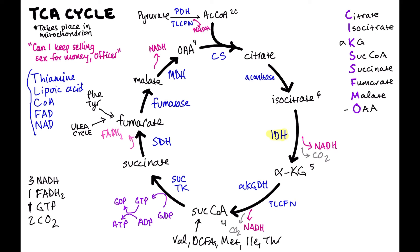Citrate has important regulatory roles. Citrate inhibits phosphofructokinase 1 (PFK1), which is the rate-limiting step of glycolysis. Citrate is essentially a marker that you have a lot of energy, so it hits the brakes on glycolysis to preserve glucose. Citrate also induces acetyl-CoA carboxylase, which is one of the steps in fatty acid synthesis — this makes sense because if you're generating a lot of energy, you want to store it.